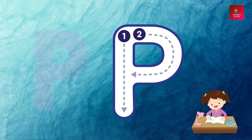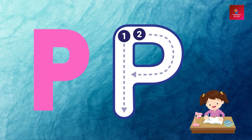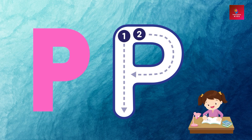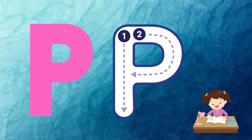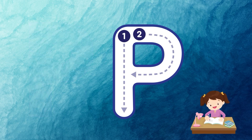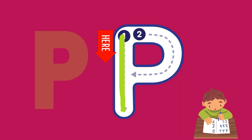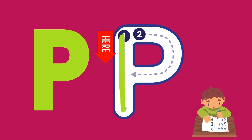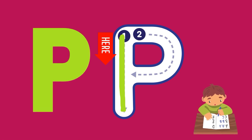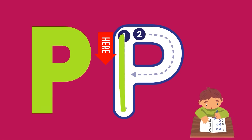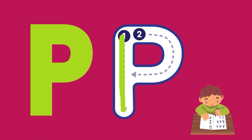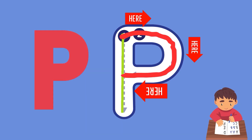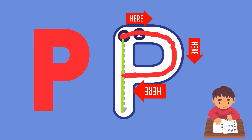Dear kids, as you know, P is for penguin. Now let's start to write alphabet P. In alphabet P there are two steps. Let's start writing alphabet P. Now we will start the first step: start from point one and draw a line downwards. You have completed the first step.